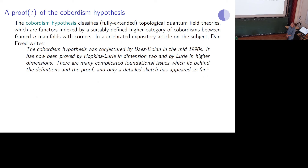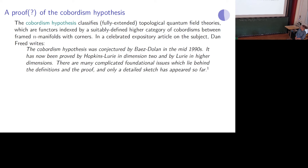The cobordism hypothesis is a conjecture by Baez and Dolan. It classifies fully extended topological quantum field theories, which are functors between higher categories — specifically infinity-n categories — indexed by some higher category of cobordisms between framed n-manifolds. As Dan Freed writes in a celebrated expository article, it has been proved by Hopkins-Lurie in dimension two and by Lurie in higher dimensions. However, there are many complicated foundational issues, and only a detailed sketch has appeared so far — the paper by Lurie claims only to be a sketch of the proof.